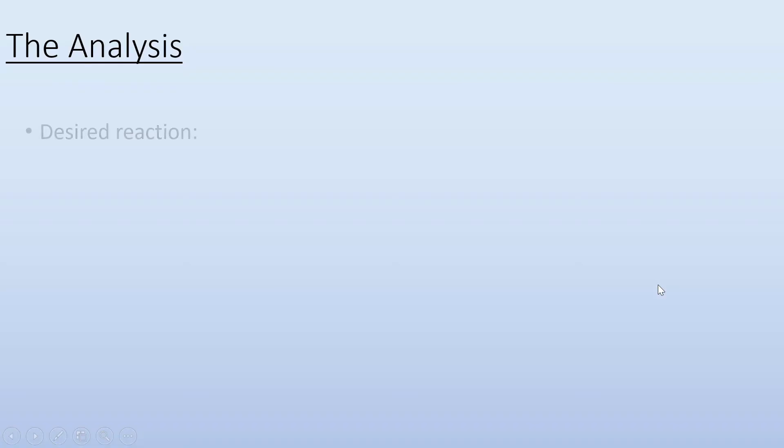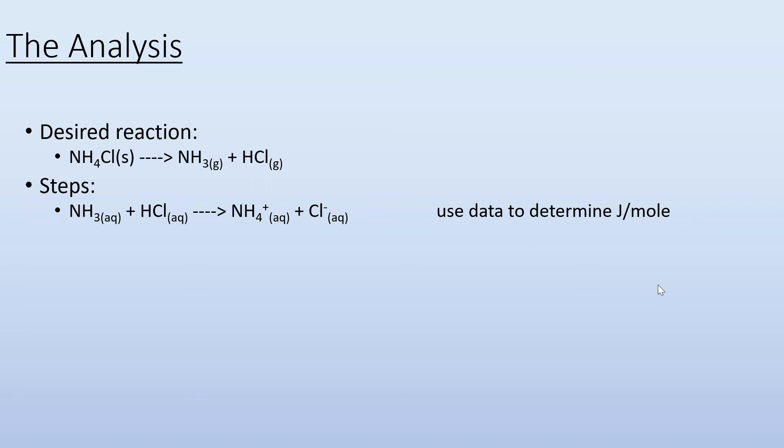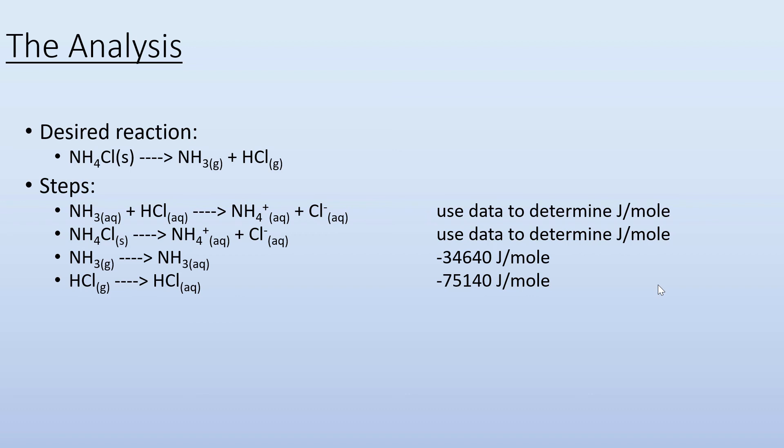Now for the analysis, our desired reaction is this ammonium chloride solid breaking apart to become ammonia gas and hydrochloric acid gas. The steps that we can get there with, applying Hess's law, will be the one from part one where we react ammonia with hydrochloric acid, and we can use the data that we collected to determine the joules per mole for that reaction. Part two as well, the ammonium chloride that we dissolved in water to give us ammonium ion and chloride ion. We can use that data to determine joules per mole for that process as well. And then they give us two other steps with given joules per mole. So we're going to use these four steps to give us our desired reaction overall and apply Hess's law to determine the joules per mole for that desired reaction.